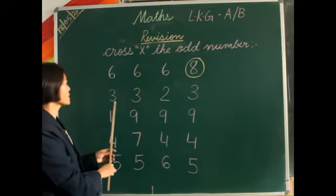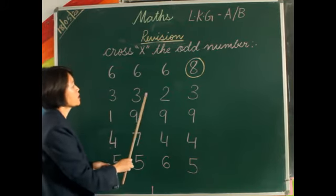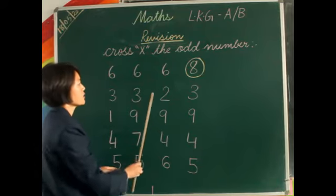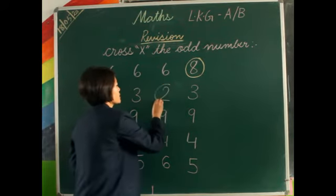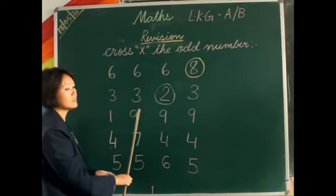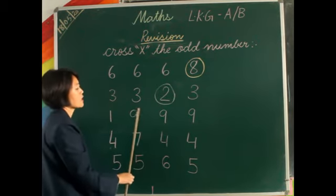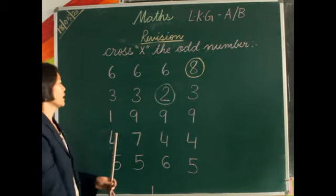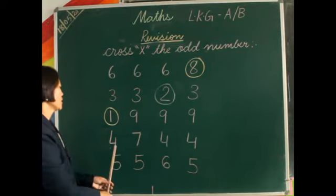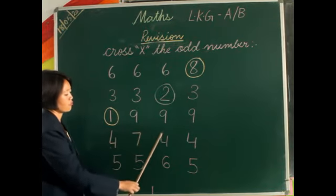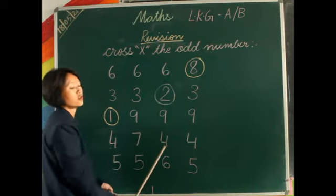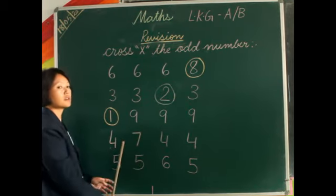Now next: 3, 3, 3, 2, and 3 — so 3, 3, 3, and 3 are the same number and 2 is the odd one. Now: 1, 9, 9, and 9 — so 9, 9, 9, and 9 are the same number and 1 is the odd number. Now: 4, 7, 4, and 4 — so 4, 4, 4 are the same number and 7 is the odd number.